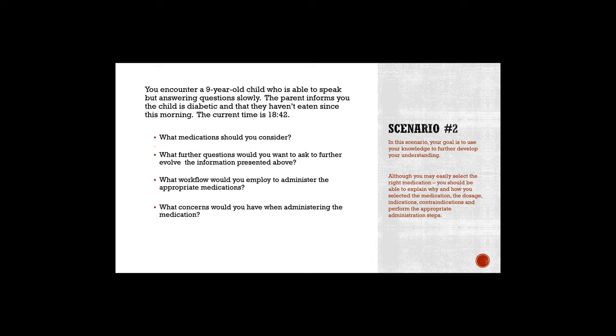Scenario two: you encounter a nine-year-old child who is able to speak but answering questions slowly. The parent tells you the child is diabetic and hasn't eaten since this morning. The current time is 18:42. What medication should you give? What further questions would you ask? What workflow would you use? What concerns would you have about administering medication to this child given their level of consciousness? What would you watch for, and what's your plan of action if something goes wrong?